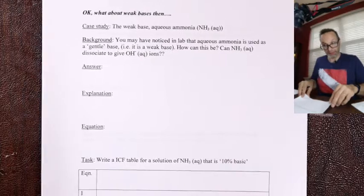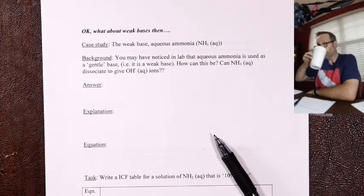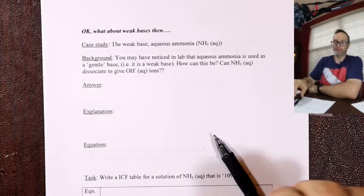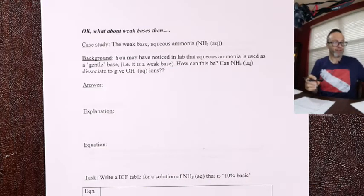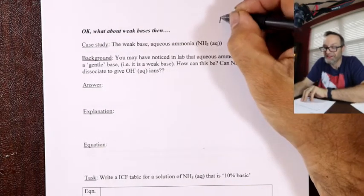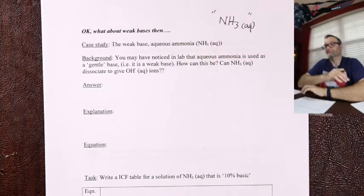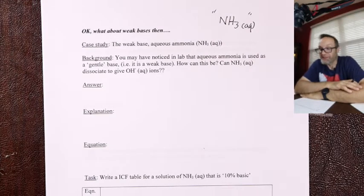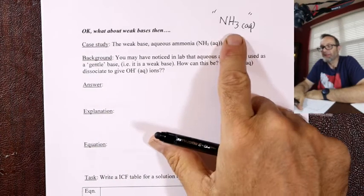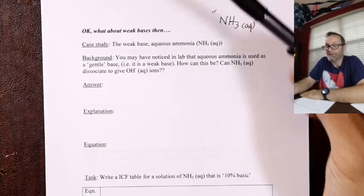There is also such a thing as a weak base. The classic example is ammonia. If you want a very gentle base in lab, you'd use ammonia solution. Ammonia is written as NH₃ — how on earth can that be a base? There's no OH in there. Yet ammonia gas dissolved in water will be basic, making OH⁻ ions.